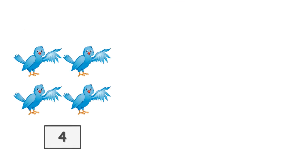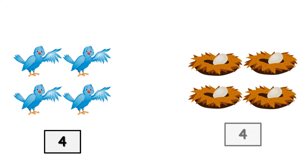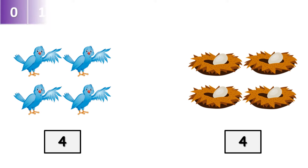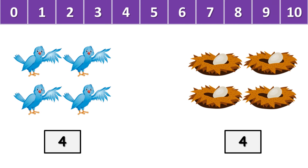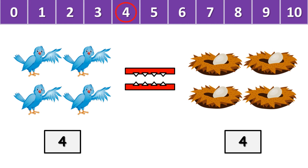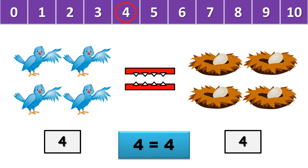Here, we have 4 birds on the left side, and 4 nests on the right side. That means 4 is equal to 4. As we have the same number on both sides, let's put the equal to sign between 4 and 4. It is written as: 4 is equal to 4.